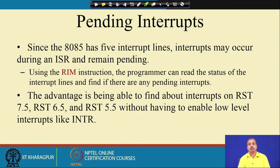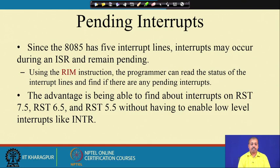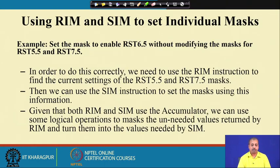Suppose RST 7.5 and 6.5 are very important devices. While servicing RST 7.5, if a 6.5 interrupt occurred but was not accepted due to lower priority, this pending bit can be checked at the end of the 7.5 ISR. If the 6.5 interrupt is pending, we can directly branch to its interrupt service routine, avoiding the chaos of re-enabling all interrupts and having 5.5 and INTR interrupts also come into picture. For that purpose, the RIM instruction is useful.